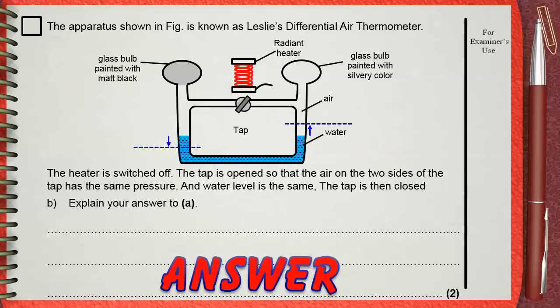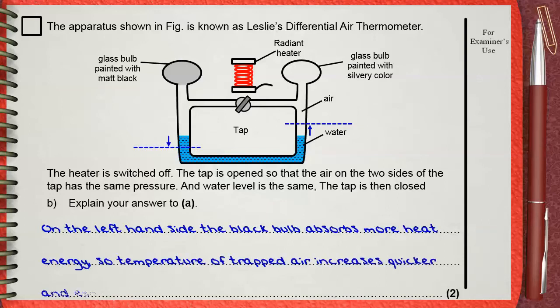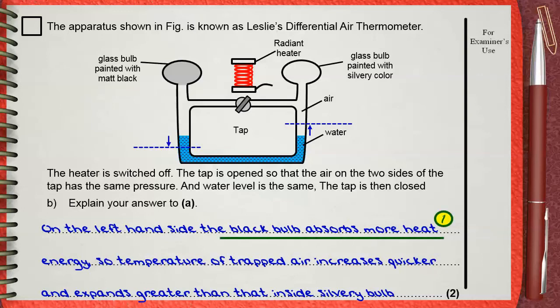This is exactly what we said previously. On the left hand side, the black bulb absorbs more heat energy, so the temperature of trapped air increases quicker and expands greater than that inside the silvery bulb. One mark is when you say that the black bulb absorbs more heat energy than the silvery one, and the second mark is when you say that the air inside the black bulb will expand more than that in the silvery bulb.